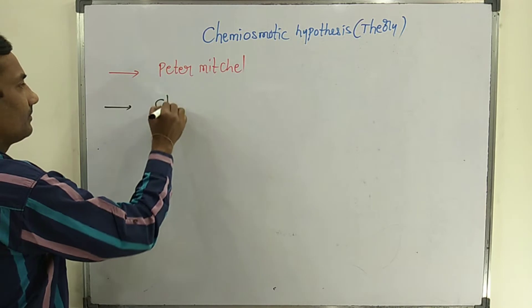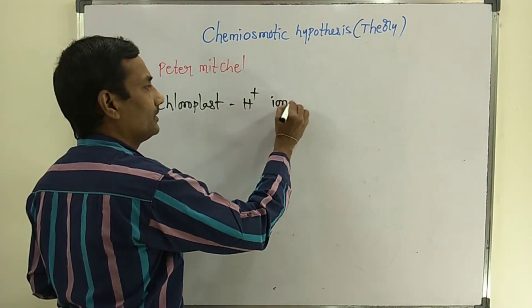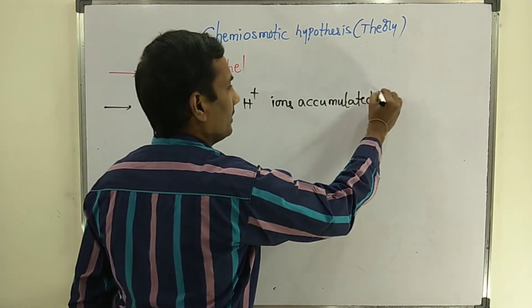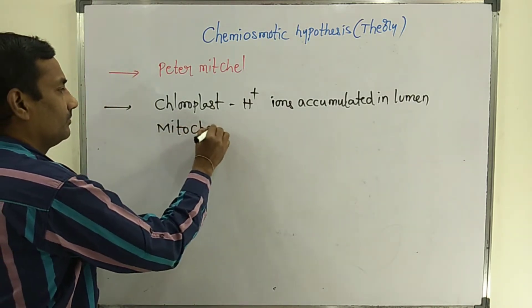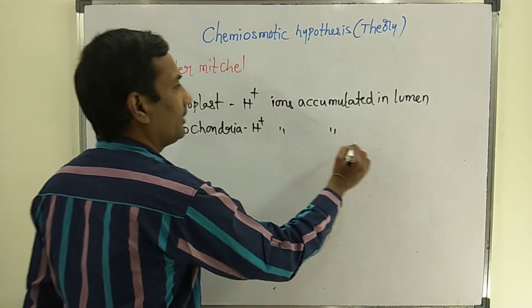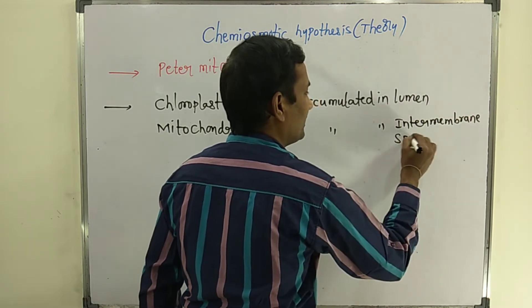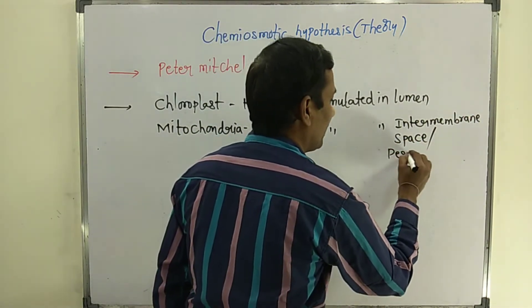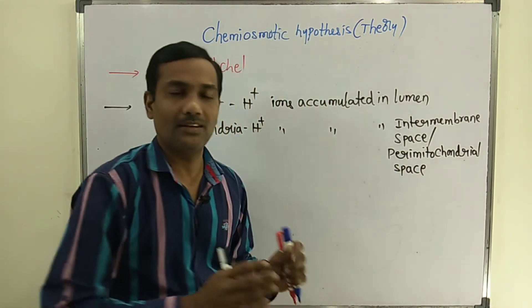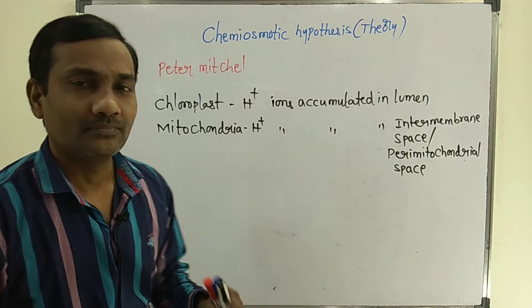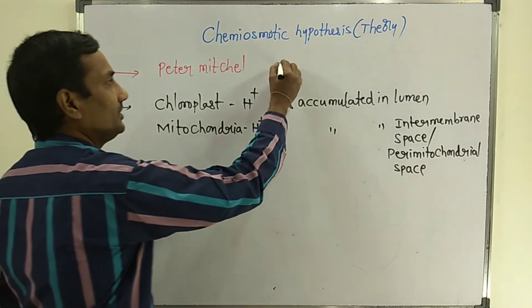In the chloroplast, protons or H+ ions are accumulated in the lumen of the thylakoid. But whereas in mitochondria, H+ ions are accumulated in the intermembrane space, otherwise known as the perimitochondrial space. That is the only difference between chloroplast and mitochondria — the accumulation of protons. This Chemiosmotic Hypothesis was clearly explained by Peter Mitchell, and he also received the Nobel Prize.